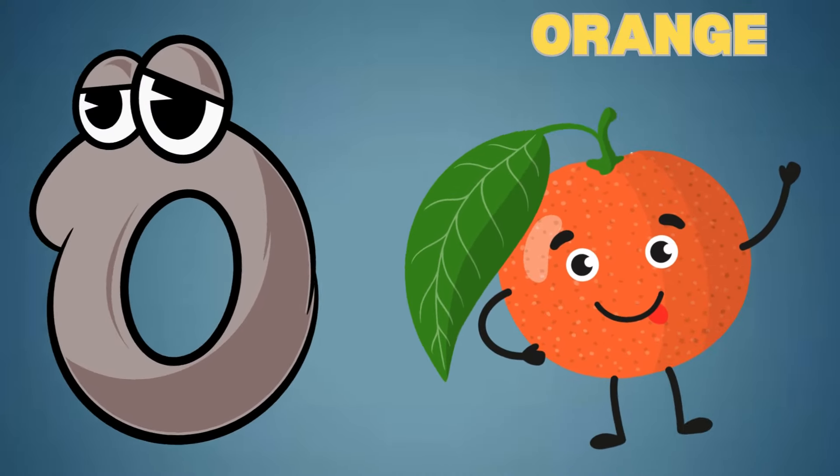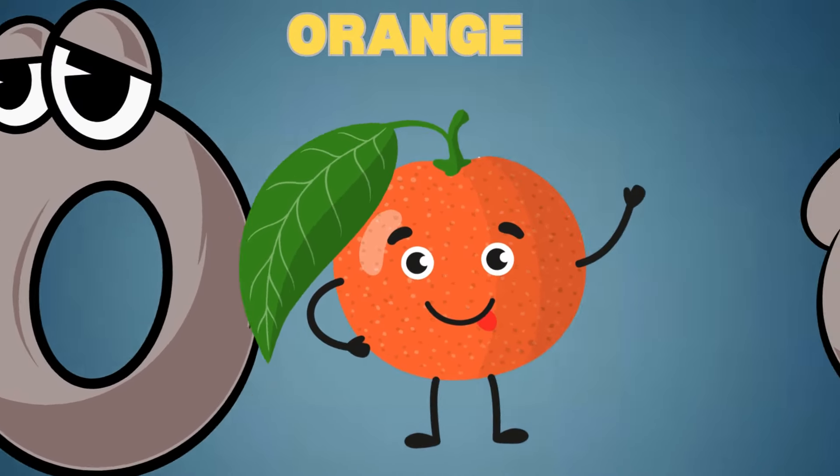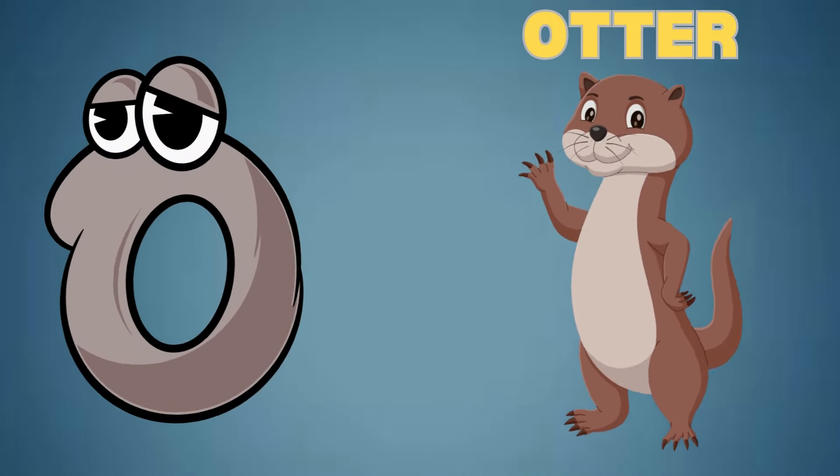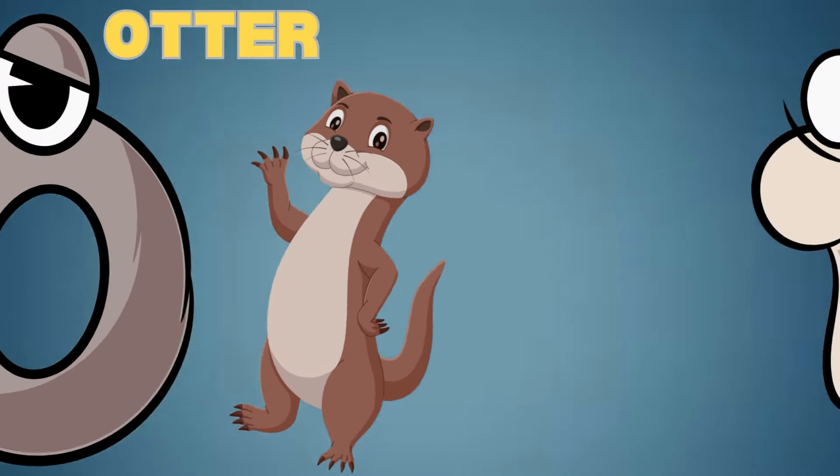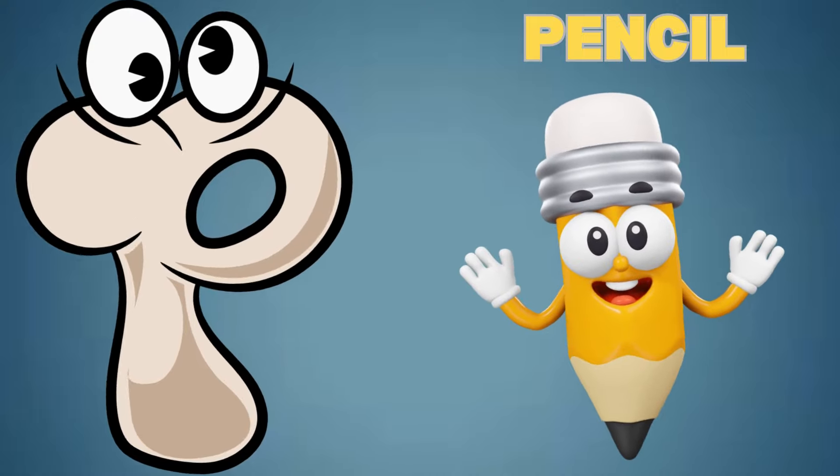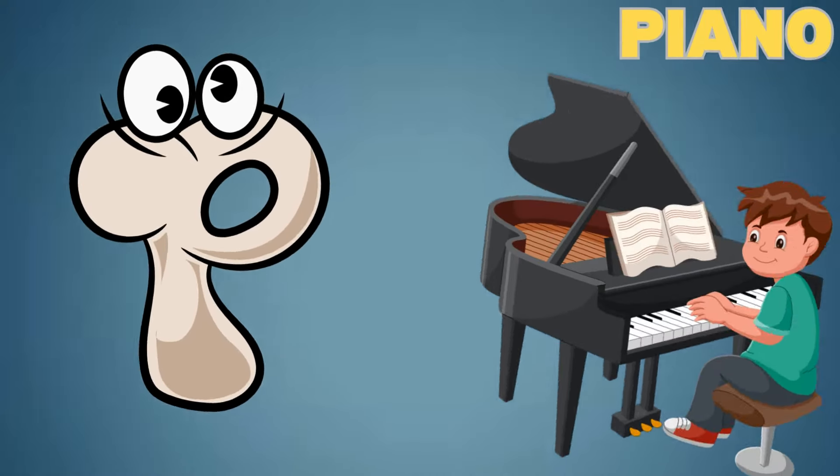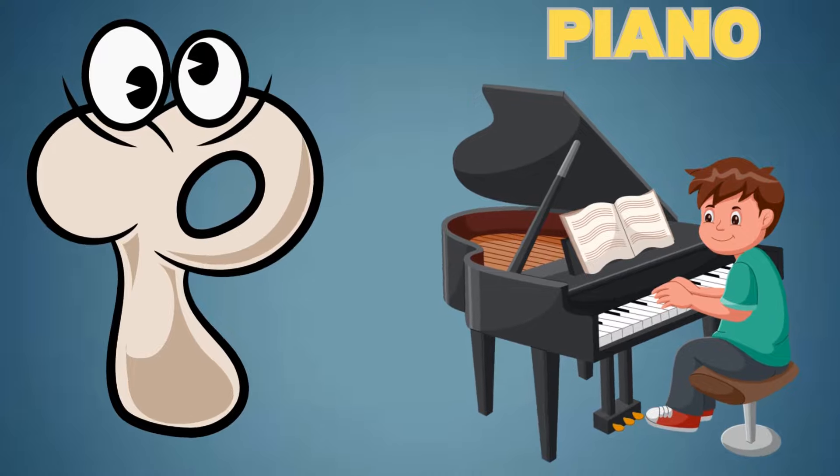O is for Orange. O is for Otter. P is for Pencil. P is for Piano.